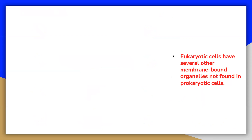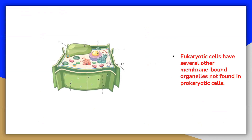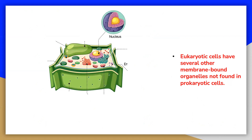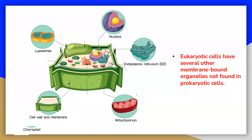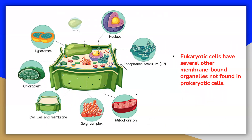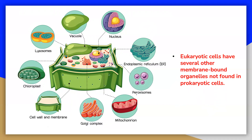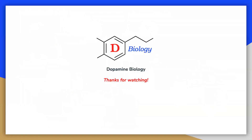Eukaryotic cells have several other membrane-bound organelles not found in prokaryotic cells. These include the mitochondria, rough endoplasmic reticulum, Golgi complex, and in the case of plant cells, chloroplasts, among many other organelles. All of these organelles are located in the eukaryotic cell's cytoplasm. Alright, thanks for watching.